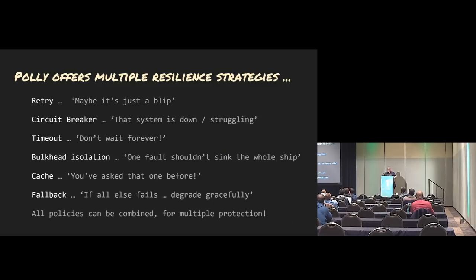Don't wait forever — that's what the timeout addresses. Bulkhead isolation means that if you have two services competing for resources and one is failing, you don't want the failing one to take down the one that isn't failing. Caching is supported. And a fallback is simply substituting exception messages that are particular for that service. So if all else fails, rather than just throwing a general exception, you can do something more specific for your logs.